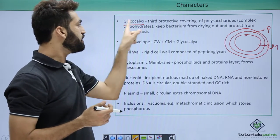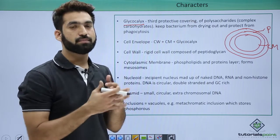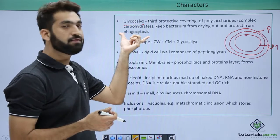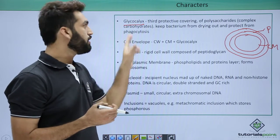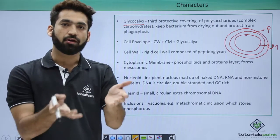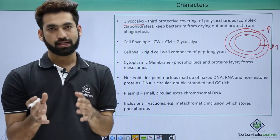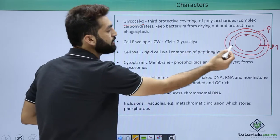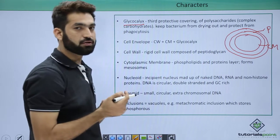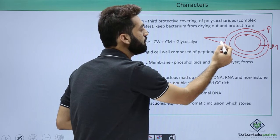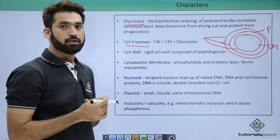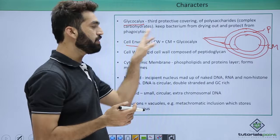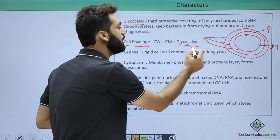The glycocalyx layer is made up of polysaccharides, which are complex carbohydrates. It protects the bacteria from drying out — it prevents desiccation and even phagocytosis, so the bacteria remain intact because of the glycocalyx layer. The glycocalyx layer is present only in some bacteria and can be thin or thick. When it is thin it is called slime layer; when it is thick it is called capsule. These three layers together — glycocalyx, cell wall, and cell membrane — are called the cell envelope.